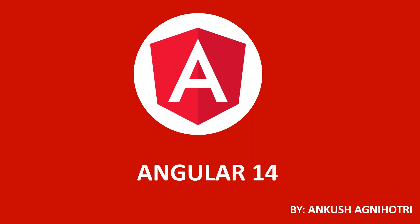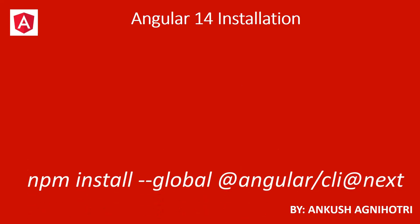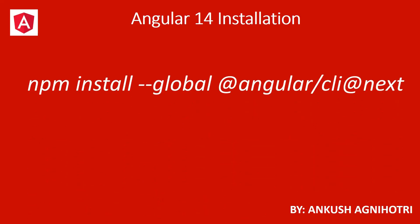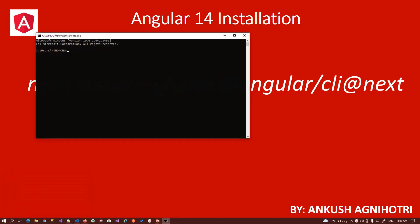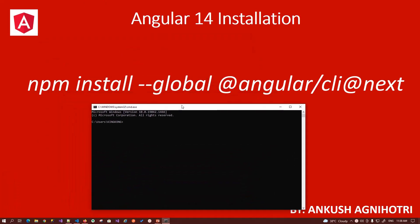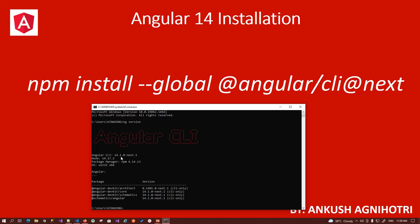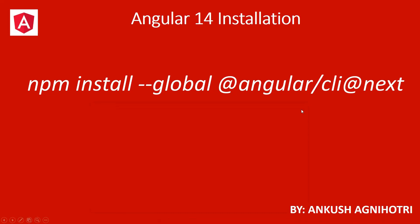The first thing about Angular 14 is how we can install it. You can install it using the command: npm install --global @angular/cli@next. This command will install Angular on your machine. Open the command window and run this command. I already installed it. After you install this Angular CLI latest version 14, check your version using the command ng version. Hit enter and you will see your Angular CLI is updated to version 14 with the next keyword. So in this way you can install Angular 14 on your system.